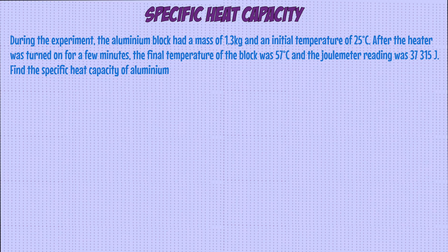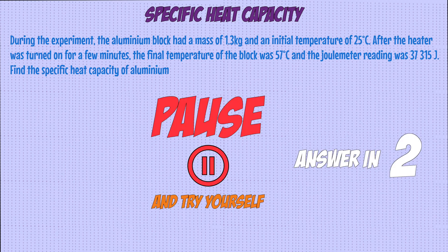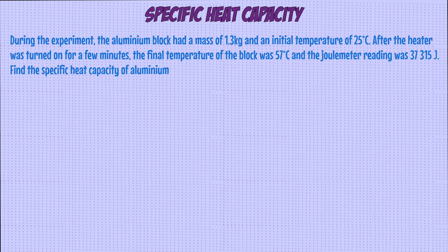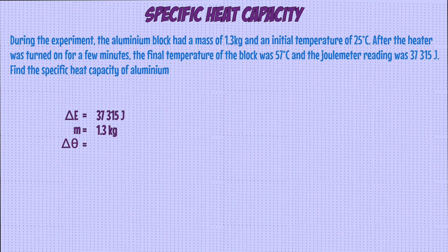So let's say we carried out this experiment and the reading on the mass balance was 1.3 kilograms, and we found the initial temperature of the metal block to be 25 degrees C. We then turned on the heater until we ended up at 57 degrees C, and this gave a joule meter reading of 37,315 joules. We can first note down the values given to us: energy of 37,315 joules and mass of 1.3 kilograms. The temperature change is found by subtracting the initial temperature from the final temperature, so that's 57 minus 25, which is 32 degrees C.